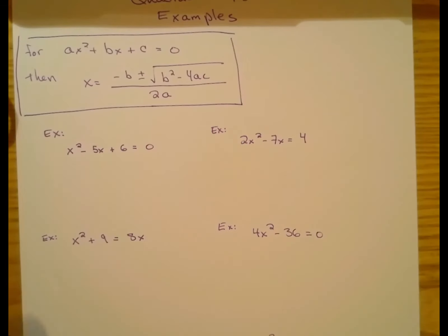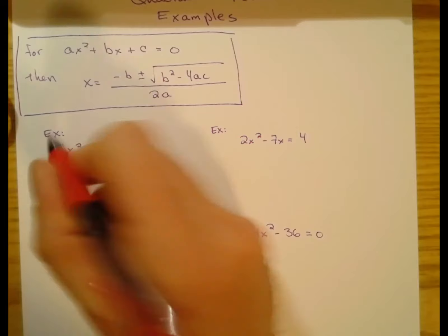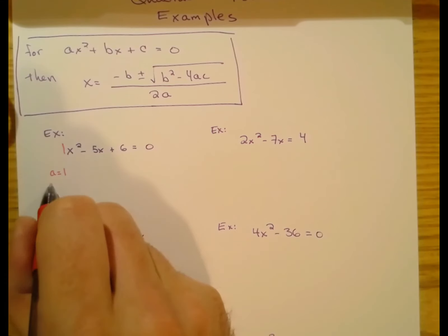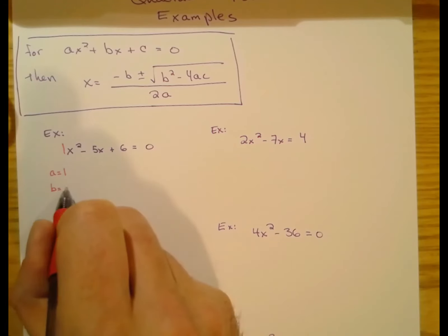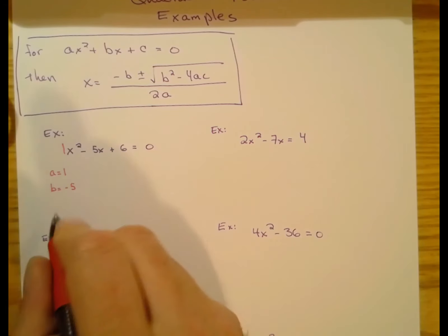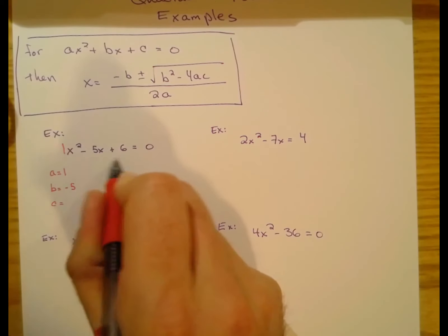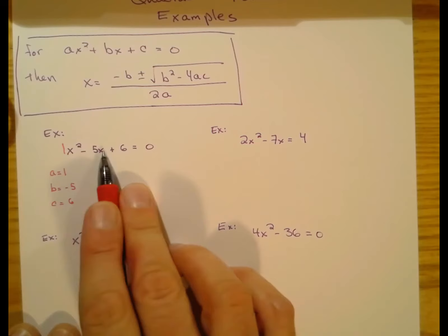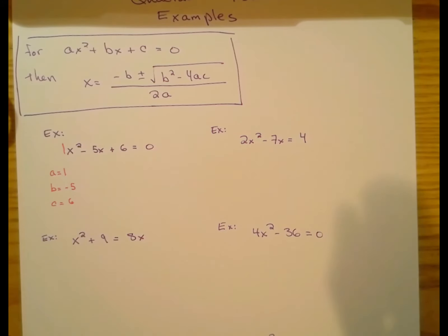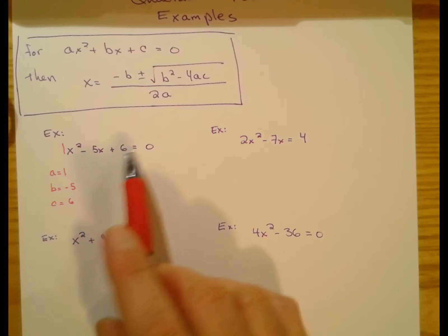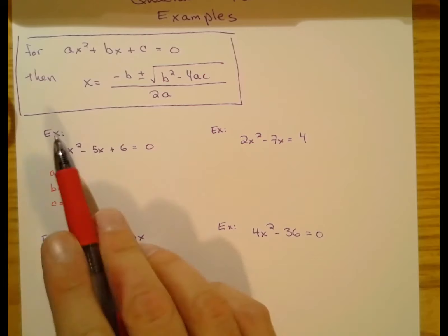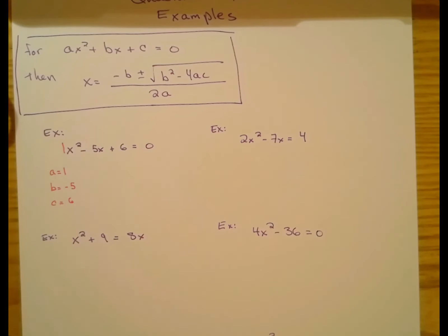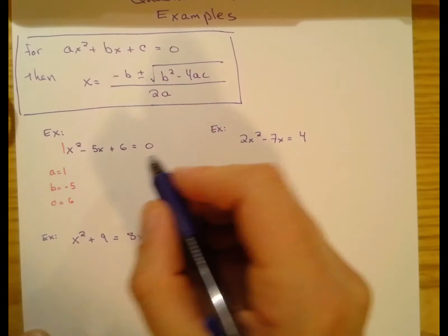First things first: a, b, and c values. If a number is not in front of a variable, you can assume the number is one. So 'a' is the coefficient for the x² term, 'b' is the coefficient for the x term — that negative is part of it, attached to the five — and 'c' is the constant, the term with no variable. We need everything on one side with just zero on the other side of the equal sign.